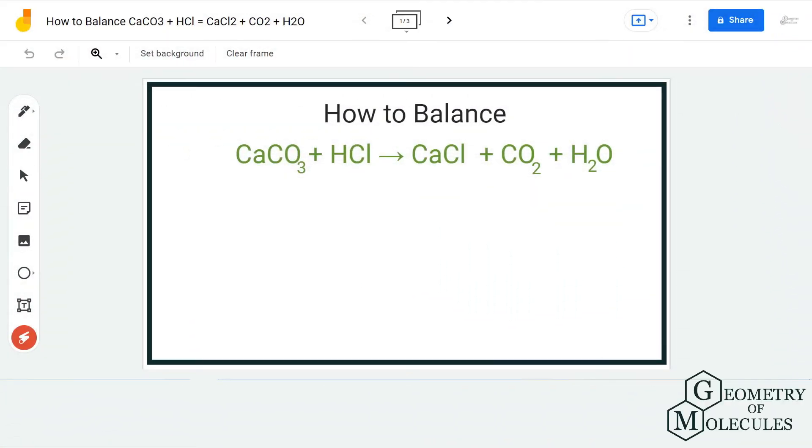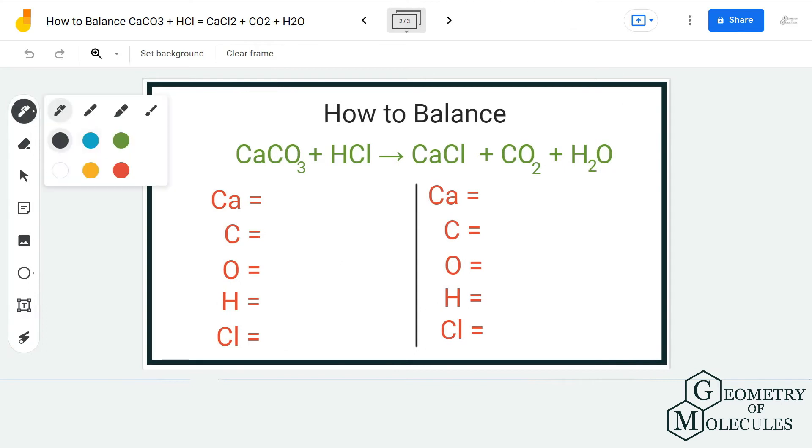Hi guys, welcome back to our channel. In today's video we are going to help you balance this equation where we have CaCO3 and HCl on the reactant side, CaCl2, CO2, and H2O on the product side. To balance this equation we first need to find out the number of atoms on both reactant and product side.